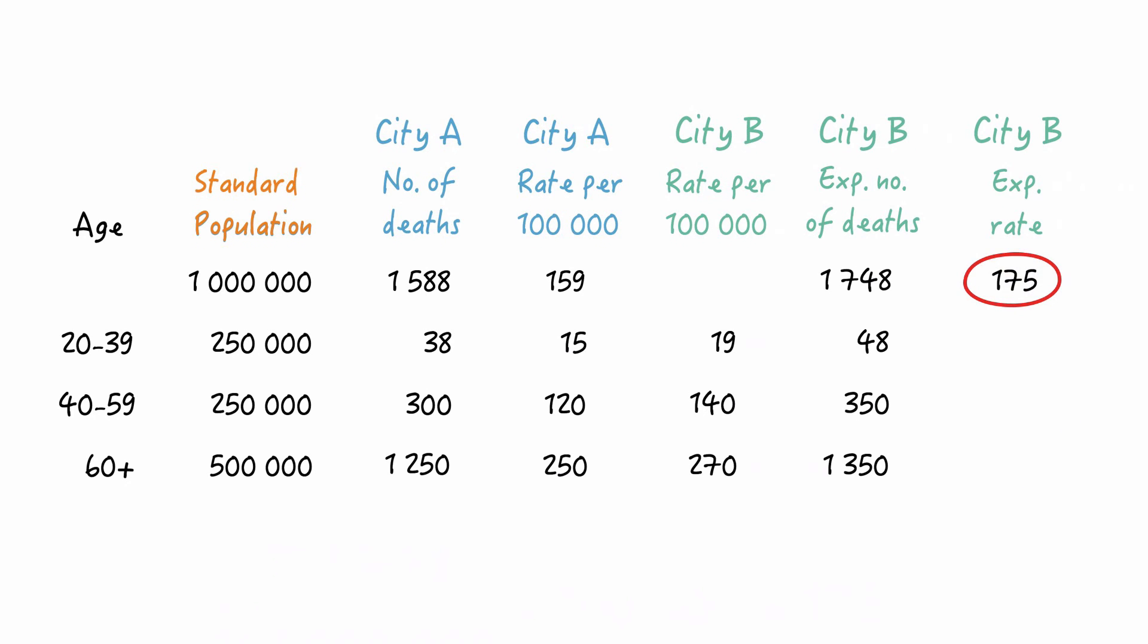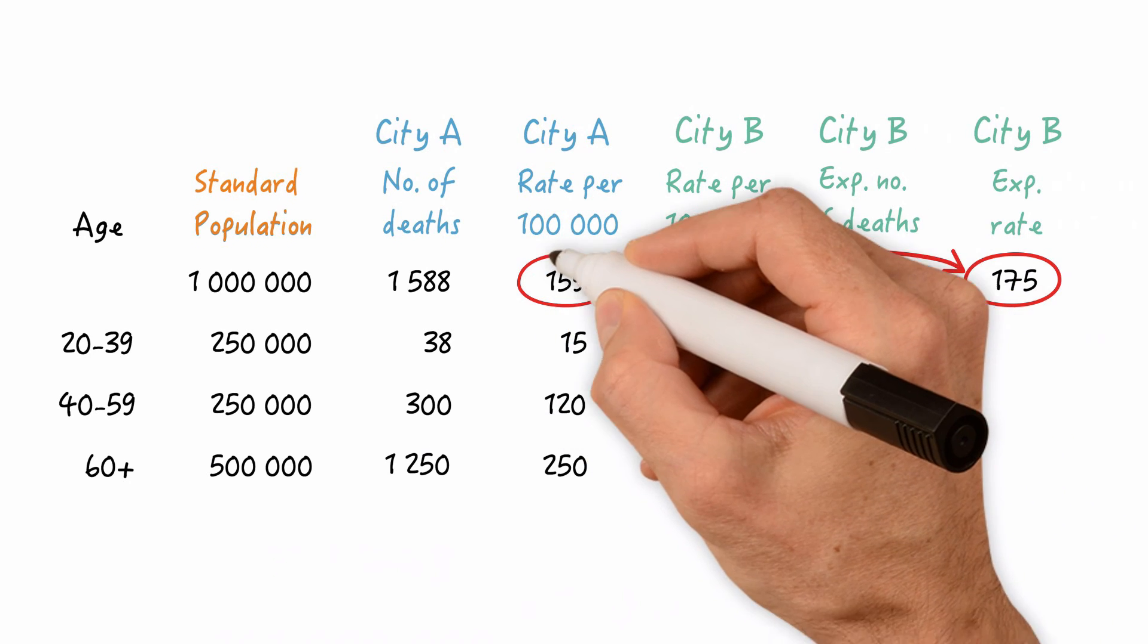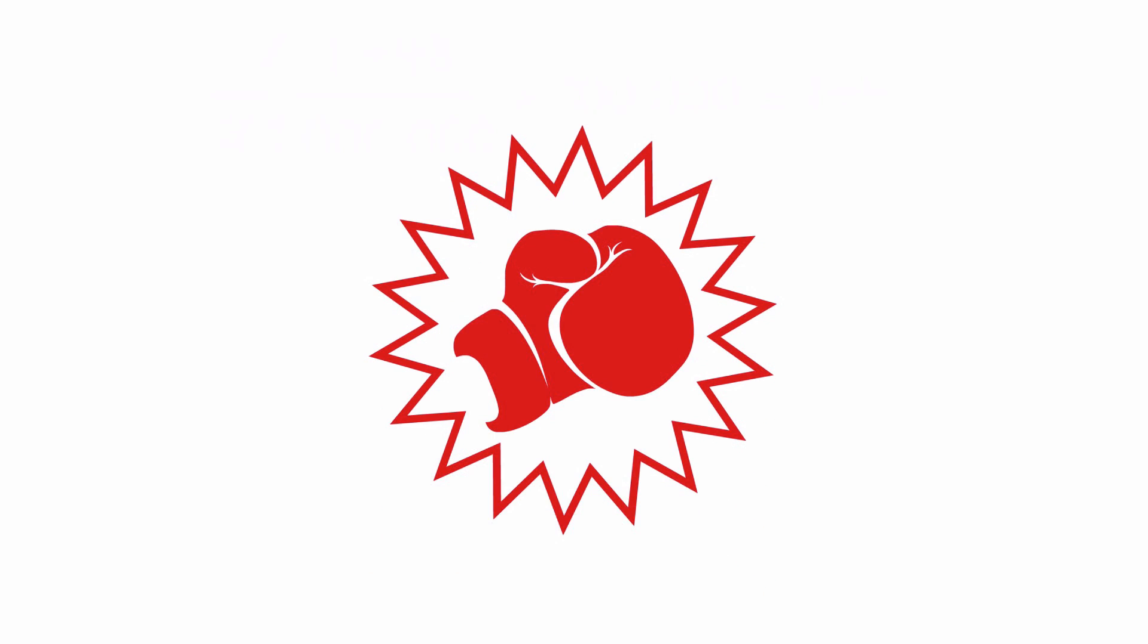Now, we can compare that to the crude death rate of city A, of 159. And what we see is that after accounting for age, the death rate of city B is actually higher than in city A. So, the same findings as with the stratified rates. So, adjustment is another powerful tool to combat confounding.